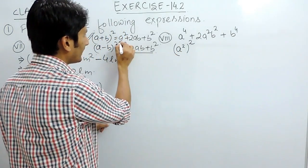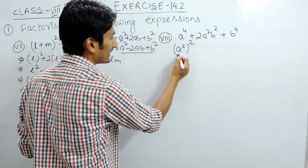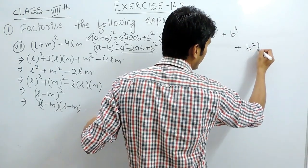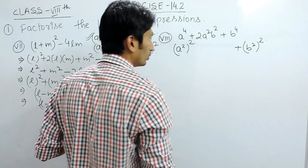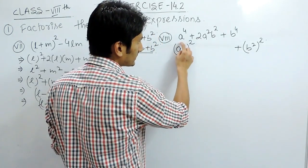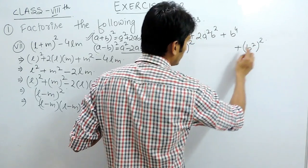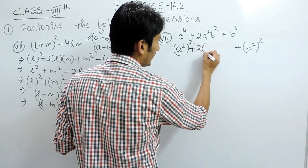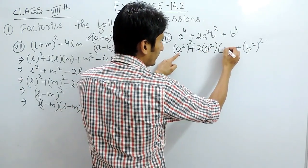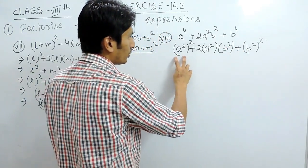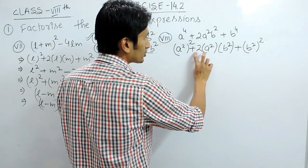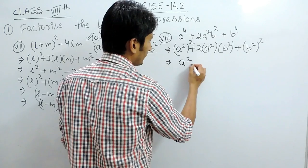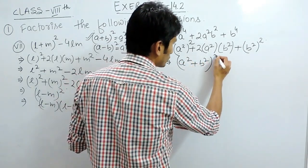So actually, our a here is a square. Means the first term is a square. Similarly, the second term can again be written as b square whole raised to the power 2. So this whole term is a and this complete term is b. So this is a square and this is b square. And in between, this is plus 2 or a is a square or b is b square. So this is a square plus b square plus 2ab. So we know that this equals to a plus b whole square.